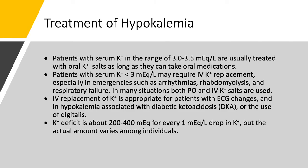Patients with serum potassium in the range of 3 to 3.5 milliequivalents per liter are usually treated with oral potassium salts, unless they cannot take oral medications. If potassium is below 3, then we may need to replace potassium intravenously. If we have rhabdomyolysis or arrhythmias, then we have to replace intravenously. Many times we do both — we replace intravenously while we are starting oral potassium salt.